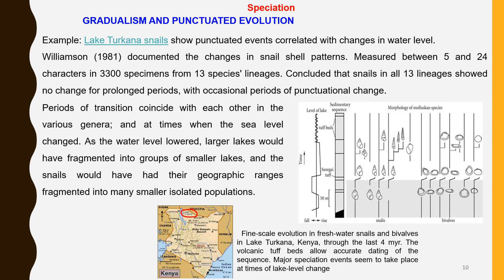An example of punctuated equilibrium is well documented by Williamson for the variations in snail shell pattern in Lake Turkana in Kenya. The geological time period for occurrence of new species or lineages correlated with changes in water level, as shown in the figure on the right. As water level lowered, larger lakes got fragmented into groups of smaller lakes. The snail populations underwent genetic drift and rapid changes occurred in these fragmented small populations. When the water level rose, these small lakes joined, bringing together the fragmented isolated snail species. In the large population formed, the stasis phase starts again.